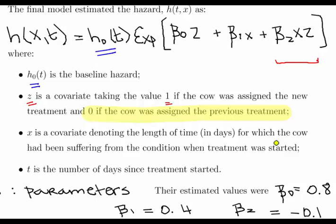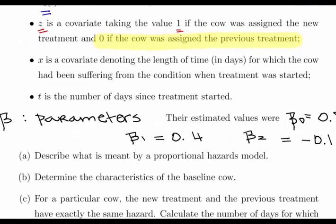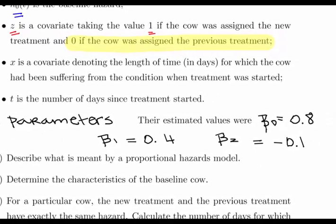For example, if I find out today the cow was suffering and I start the treatment in 2 days time, obviously X is 2 days. T is the number of days since the treatment started. Beta represents the parameters. The estimated values for all the betas are: beta zero = 0.8, beta one = 0.4, and beta two = minus 0.1.